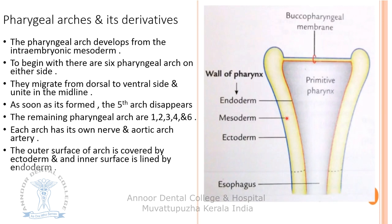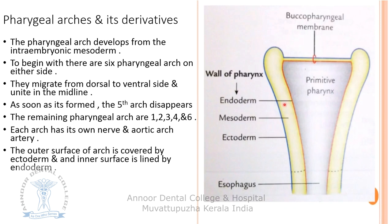Looking at the coronal section through the foregut before the appearance of the pharyngeal arches: the endodermal wall of the foregut is separated from the surface ectoderm by a layer of mesoderm. The outer surface of the arch is covered by ectoderm, the inner surface is lined by endoderm, and the middle layer is formed by mesoderm.